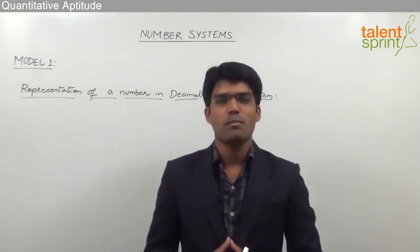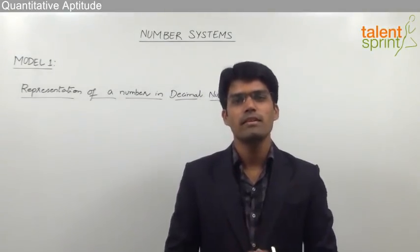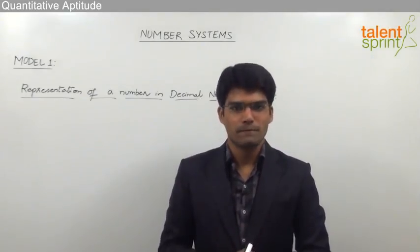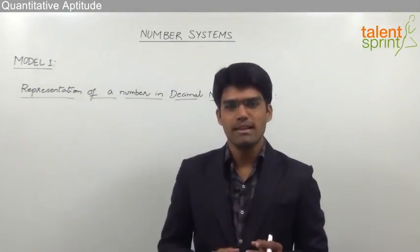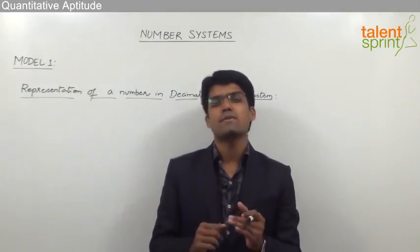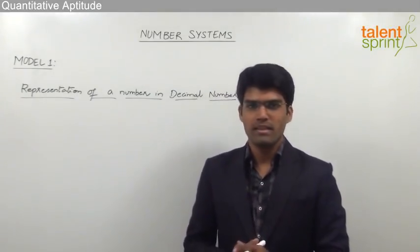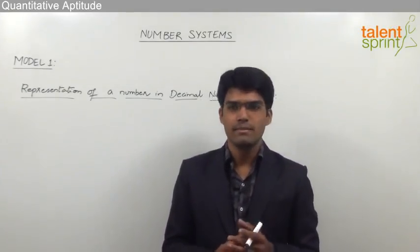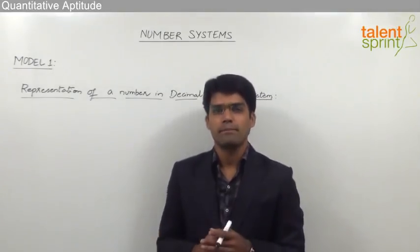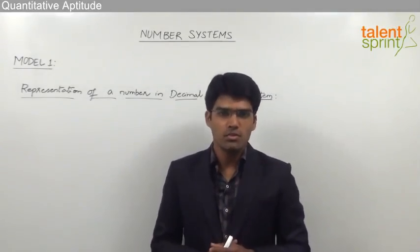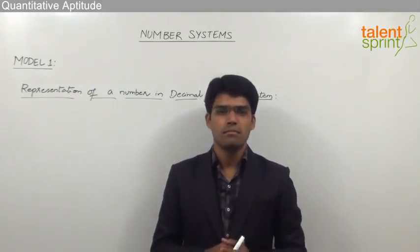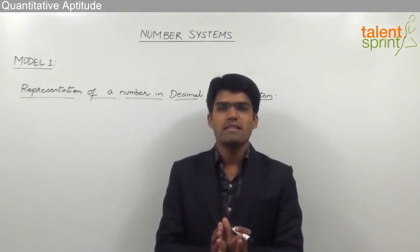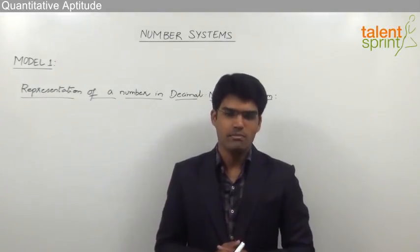Let us now take the first module from this topic of number systems, where we are going to discuss questions related to interchanging of digits of a given number. But before we take an example, let us understand how to represent numbers in the decimal number system. We follow the decimal number system where the base is 10, meaning there are 10 different symbols from 0 to 9, and all numbers are made up of a combination of these 10 digits.